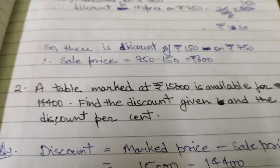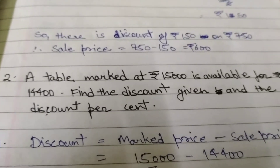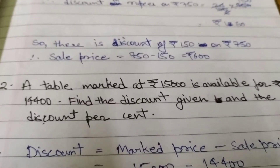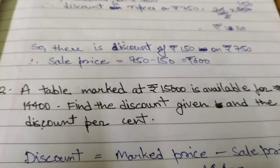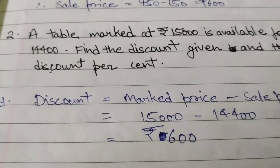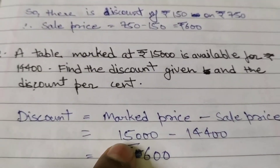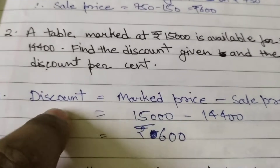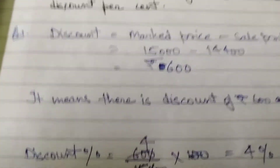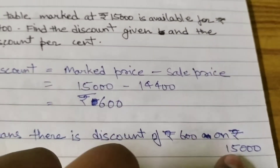First question is done. Second question: a table marked at rupees fifteen thousand is available for rupees fourteen thousand four hundred — find the discount given and discount percent. The discount formula is marked price minus sale price. Marked price is fifteen thousand, sale price is fourteen thousand four hundred, so discount equals rupees 600.